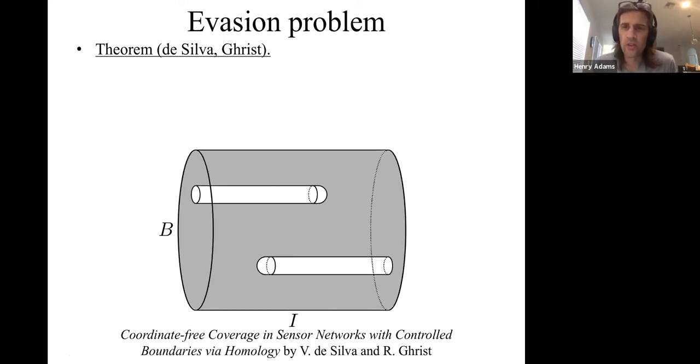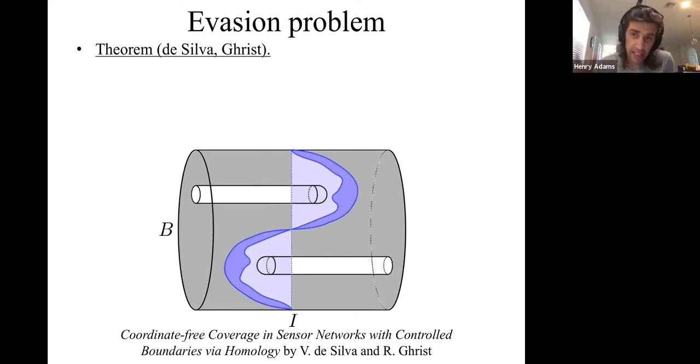We can use this theorem to prove that there's no evasion path here. Draw this blue sheet alpha in the time varying covered region in gray. And we've separated time zero from time one. That shows that any intruder is going to have to at some point walk through this blue sheet alpha, precisely when it's going to get caught by the sensors. So we've proven that this sensor network here does not have an evasion path.